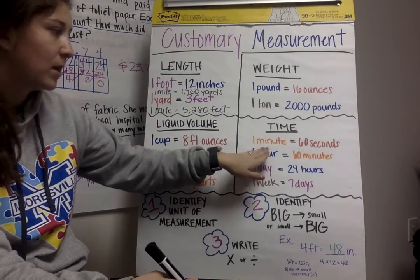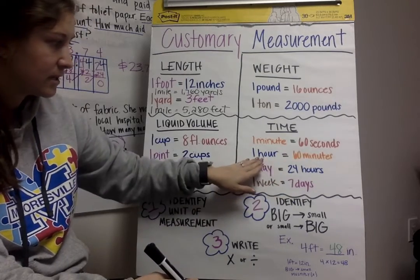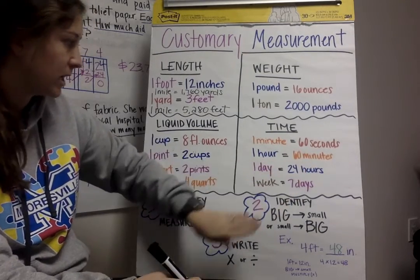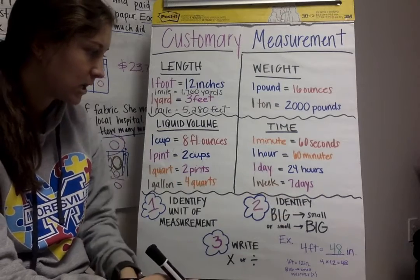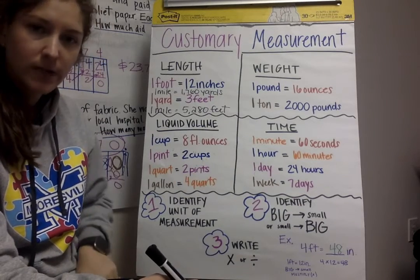So then we have time. One minute equals 60 seconds, one hour equals 60 minutes, one day equals 24 hours, and one week equals 7 days.